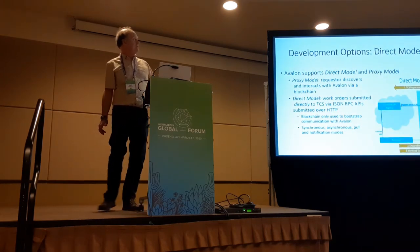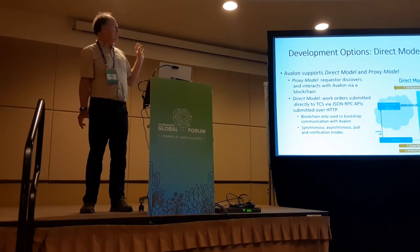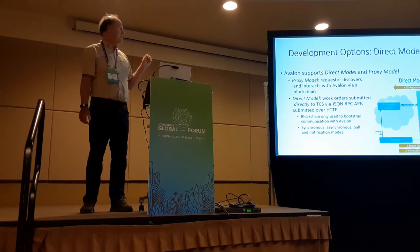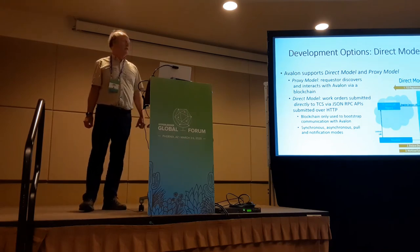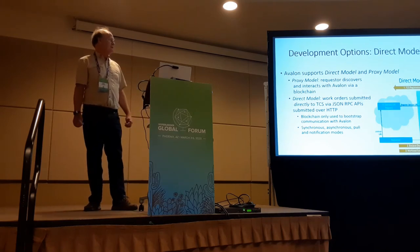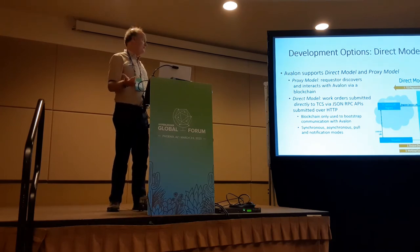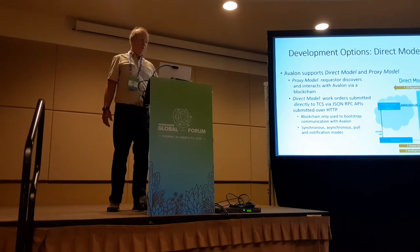Here's the direct model. You have the direct model or a proxy model. In the direct model, your work orders are submitted directly to Avalon using the standard JSON-RPC API, and the blockchain is only used to bootstrap Avalon. After you submit a work order, you have a choice of how you're going to be notified: synchronous, async, pull, and notification — so there are various options depending on your problem set.